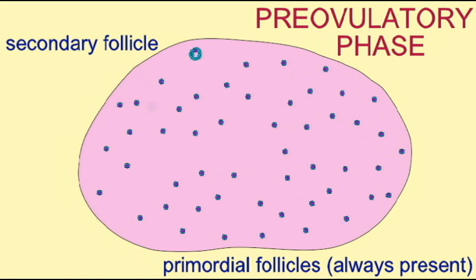This secondary follicle makes its own estrogen, and so therefore when the FSH from the pituitary decreases, it can maintain itself, unlike the other primary follicles which are not as developed.